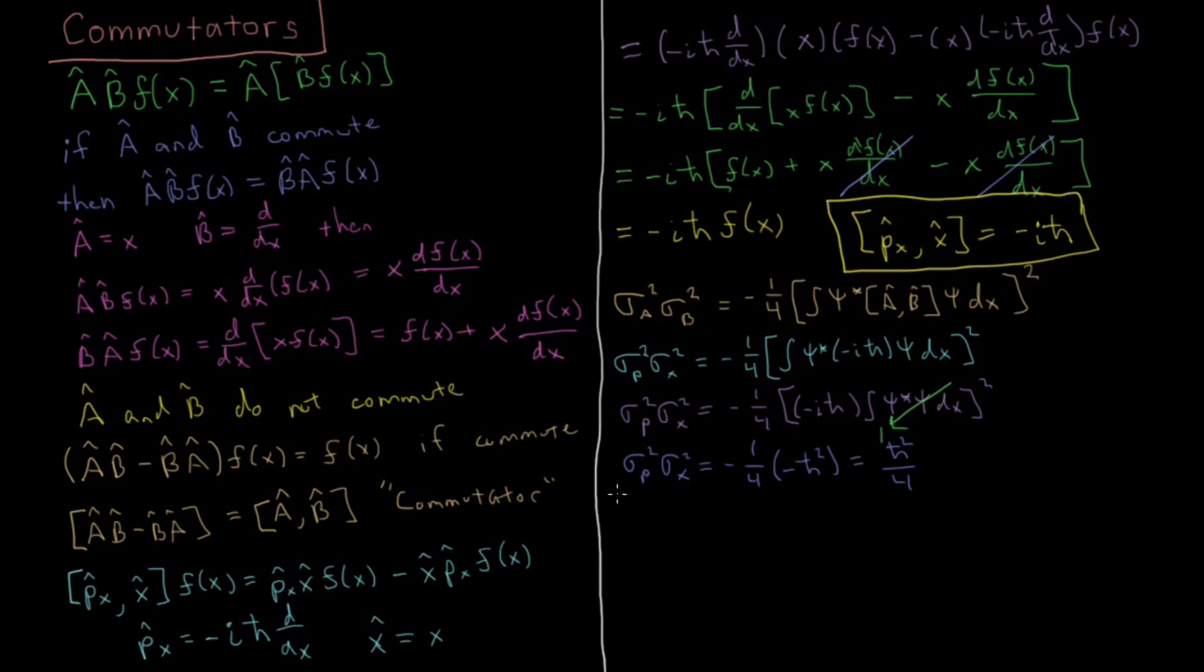The quantity that we're usually interested in when we're looking at products of uncertainties is the square root of that: sigma p sigma x, or the standard deviation in momentum times the standard deviation in position. The product of these two, the uncertainty of the product. This is what we were calculating in previous videos when we were talking about the Heisenberg uncertainty principle. This is the product of these two uncertainties, which is just the square root of the variance of each of them. Taking the square root, you just get h-bar over 2.